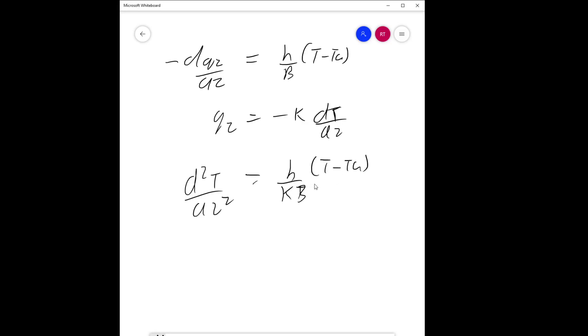We have two boundary conditions. When Z equals zero, T equals T_w. The next one is at Z equals L, dT/dZ equals zero.